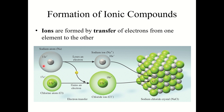A neutral sodium atom has 11 electrons and 11 protons. As we learned in the last chapter, sodium likes to lose one electron and become the plus one sodium ion. Now if we look at chlorine, neutral chlorine has 17 electrons and 17 protons. Chlorine likes to gain one electron to become the chloride anion. So these two are a perfect match. Sodium will transfer one of its electrons to chlorine, which forms the sodium ion and the chloride ion.